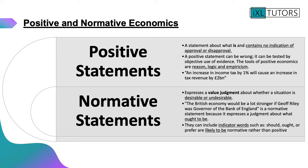A positive statement is a statement about what is, and has no indication of approval or disapproval. It can be wrong, but it has to be able to be tested by objective use of evidence. The tools of positive economics are reason, logic, or empiricism. For example: 'An increase in income tax by one percent will cause an increase in tax revenue by two billion pounds.' That's a positive statement because it's something that can be measured and proven — even if it turns out to be wrong.